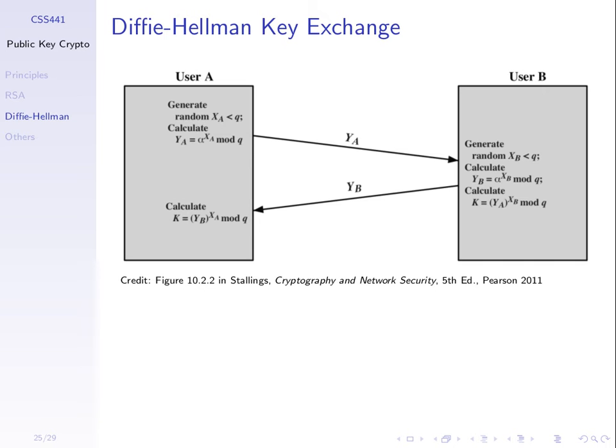We've gone through two examples. As a reminder, the process is that there are two global variables — two values we assume A and B know, and others may know too. They either agree upon them up front, or user A chooses them and sends them in a message to B. Everything sent across the network, we assume the attacker can see.